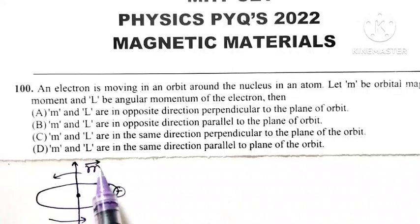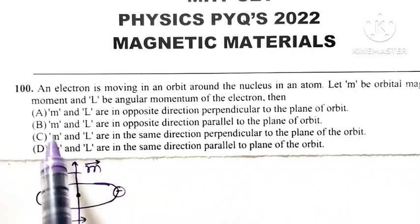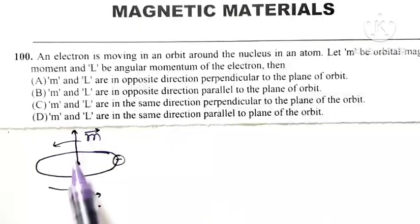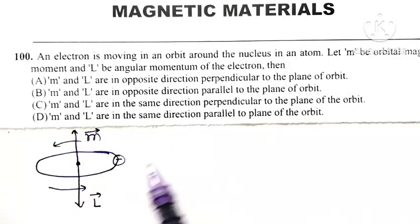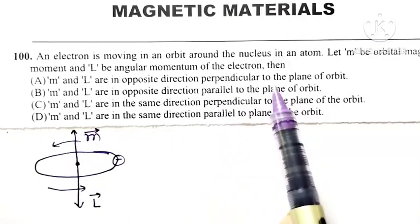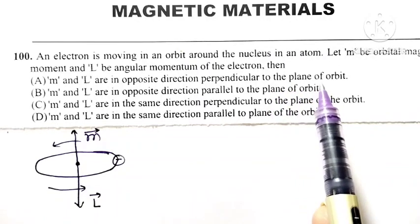It means both m and L are opposite in direction. If one is pointing upward, then the other will point in downward direction, and both are perpendicular to the plane of the orbit.